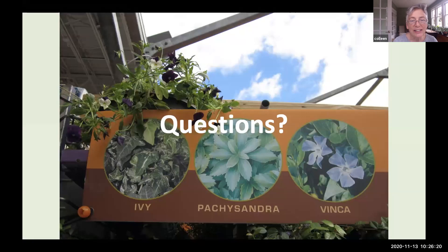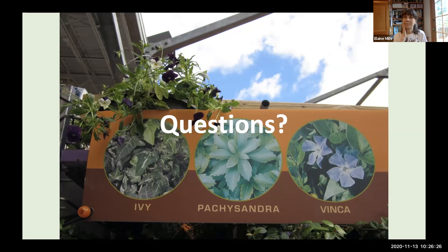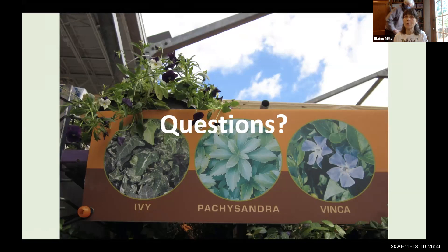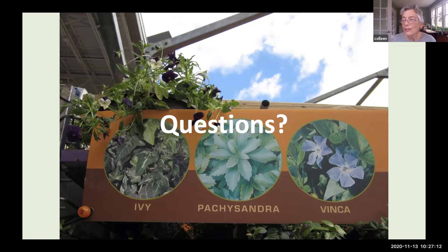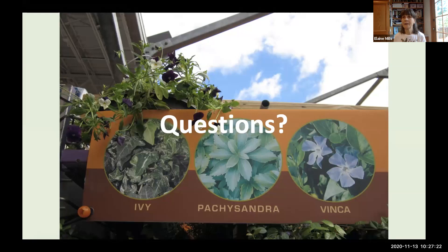There were questions on removing invasives — those will be addressed later in the talk. One question: is American wintergreen a good alternative for Vinca? It's an attractive native plant, Gaultheria procumbens, but a number of local master gardeners have had challenges growing it, which is why I didn't recommend it here. It is available in local native plant nurseries. Another question: are all varieties of liriope invasive? Both Liriope spicata and Liriope muscari are listed as invasive by Arlington County and Alexandria.